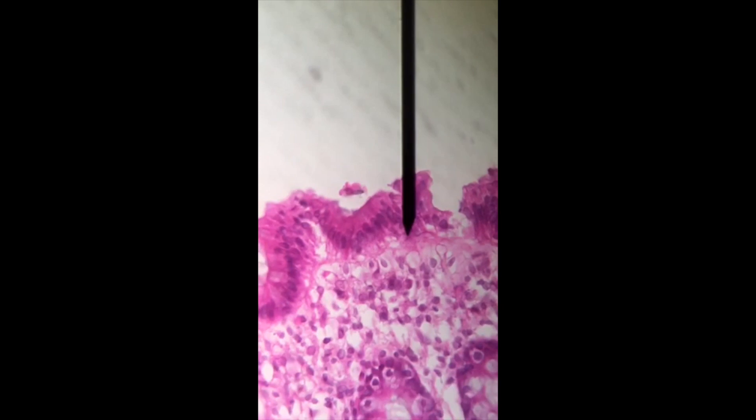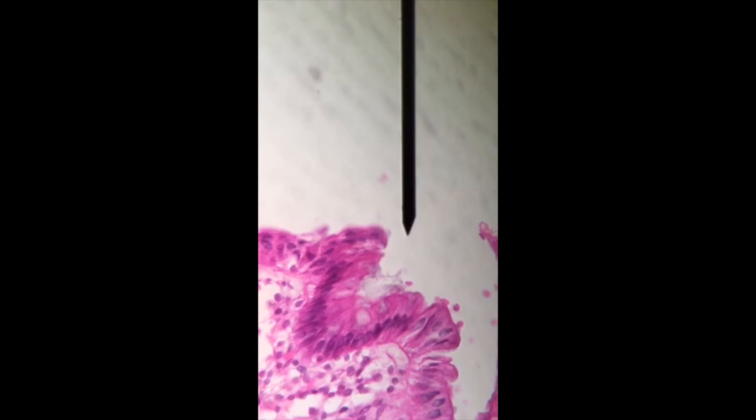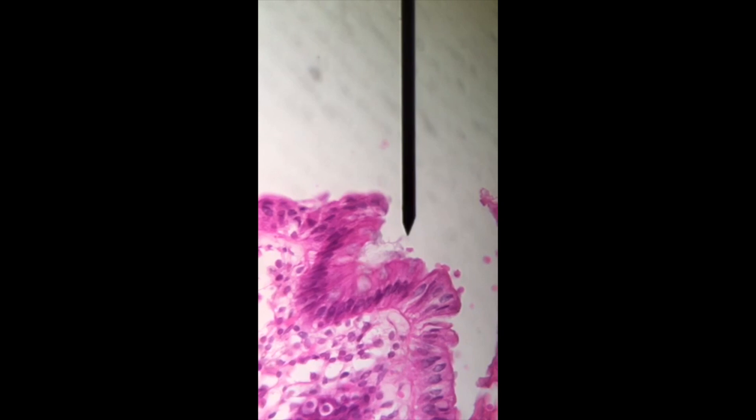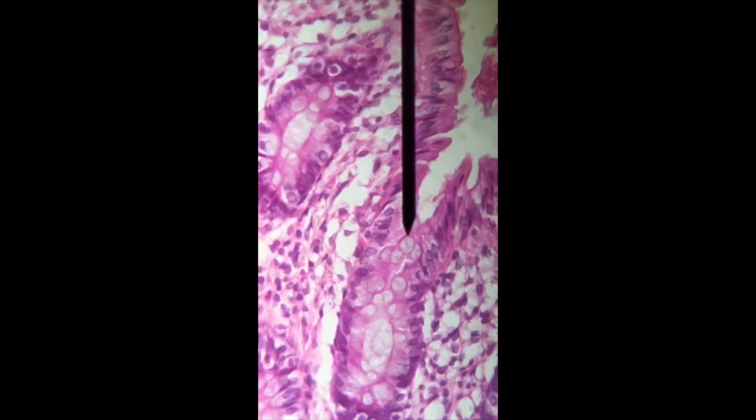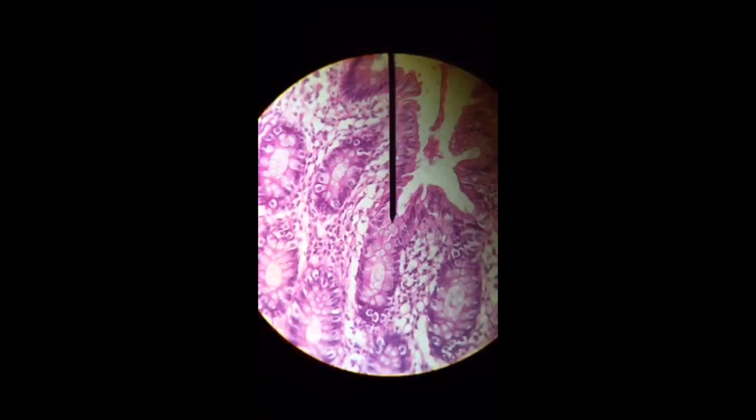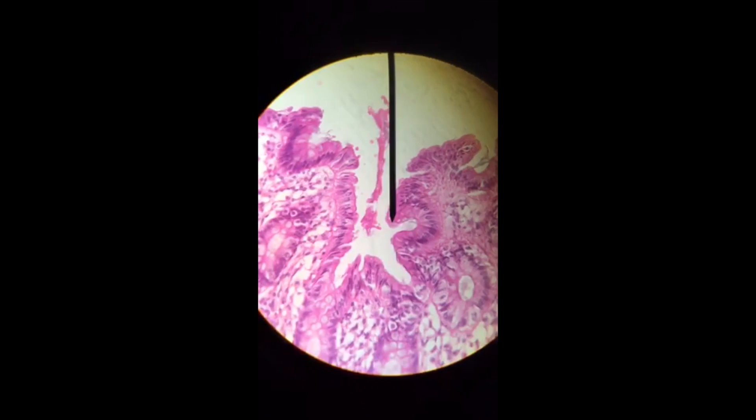And we're going to see as we move around, we'll see some nice goblet cells that are going to line this. We're going to have a lot of goblet cells in these structures. It's going to secrete a lot of mucus. There's another gland within the crypt, our intestinal crypt, our crypt of Lieberkühn.